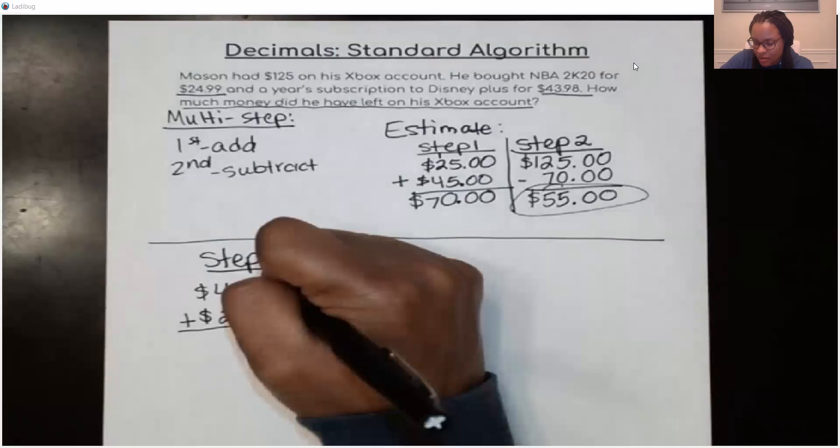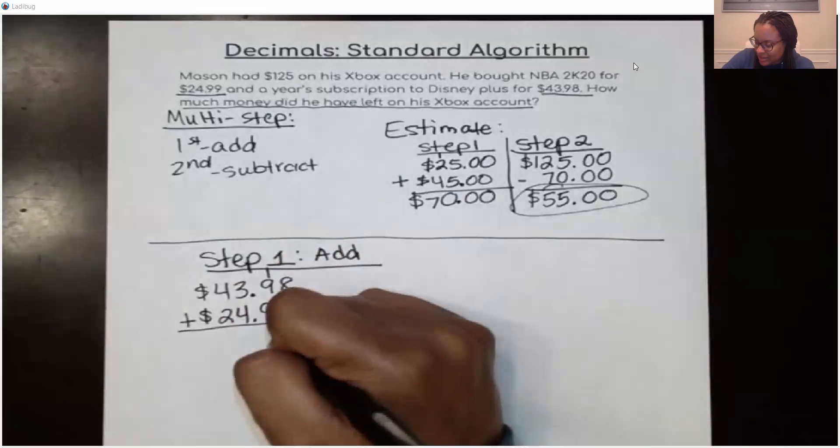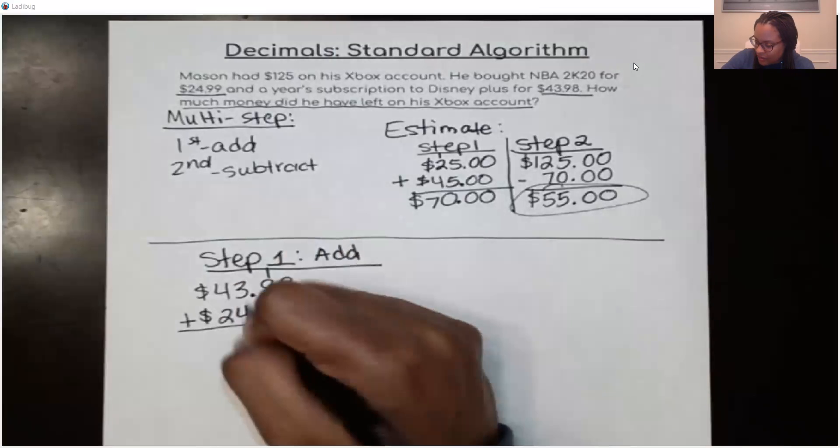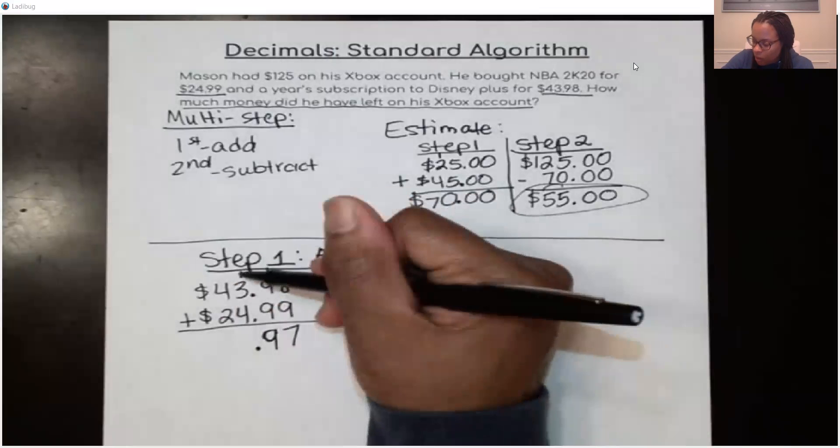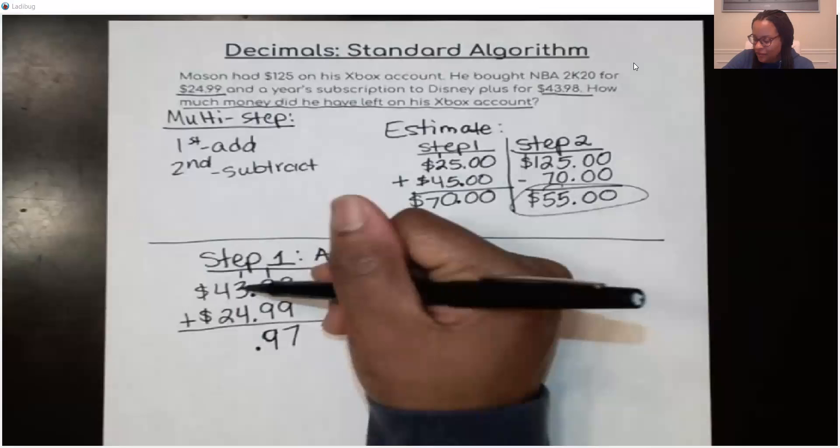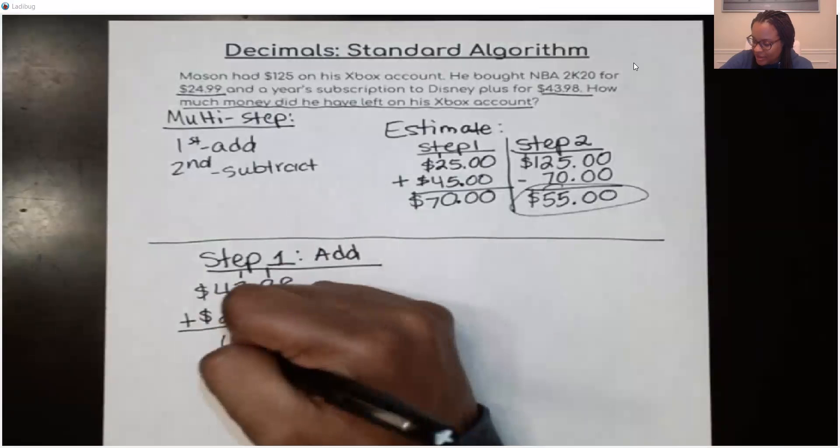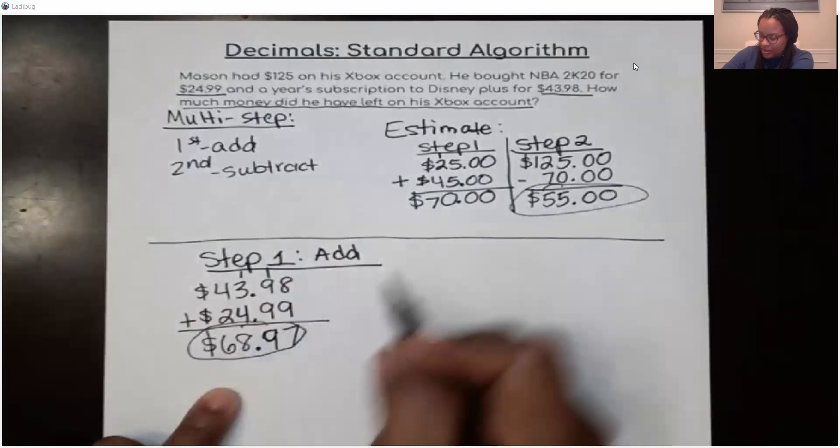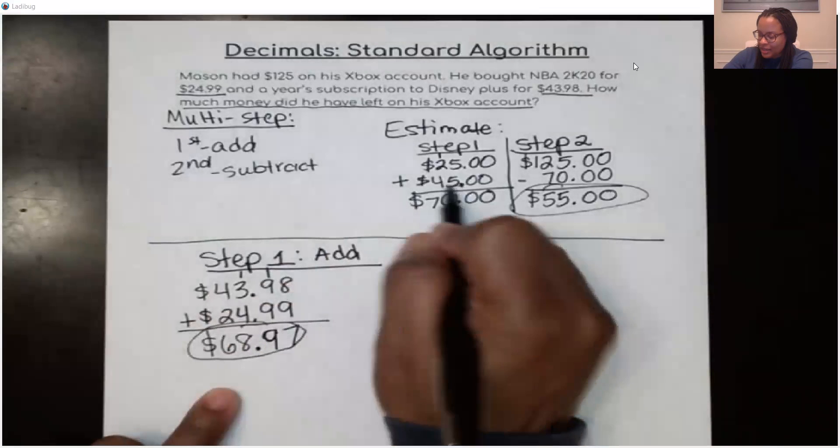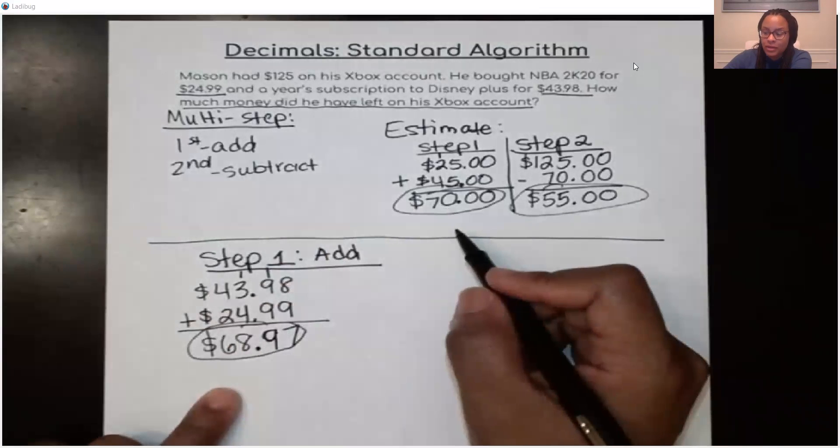So I'm going to leave the 7 here and carry the 1. 1 plus 9 is 10. And 10 plus 9 is 19. So I'm going to put a 9 here. Bring my decimal down and carry the 1. So when you're adding and subtracting, again, you have to line up your decimals. 1 plus 3 is 4. And 4 plus 4 is 8. 4 plus 2 is 6. And then I'm going to bring down my dollar sign. So if I look at this number here, this is pretty close to what I had here. $68.97. Pretty close to $70. So, so far, I know I'm on the right track.